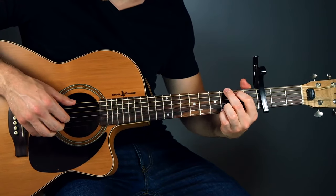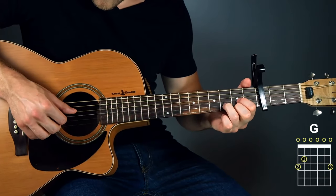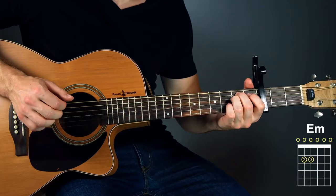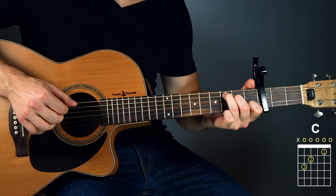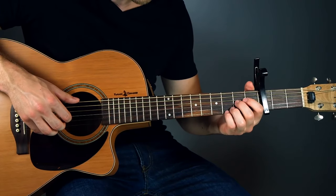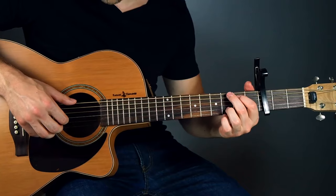So the chord progression this one is loosely following is G, D, E minor, and then C. So you've got 4 different sections or 4 different repeats of our riff and they're basically going to follow that pattern. So I'll play it for you first so you can see and then we'll go through it.